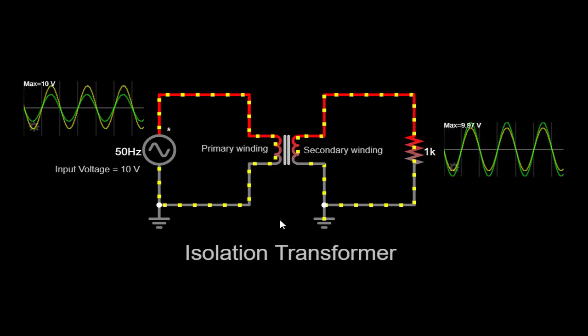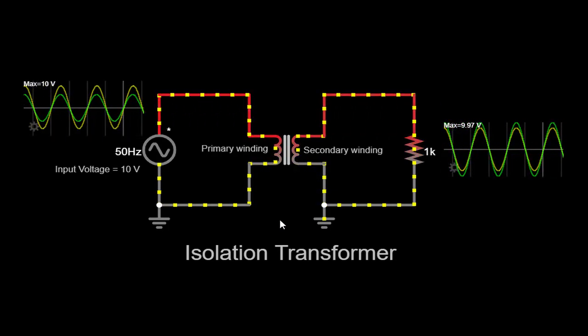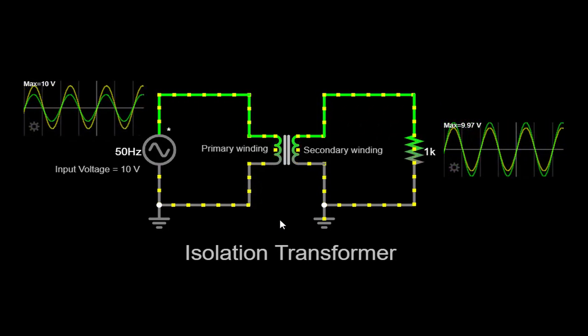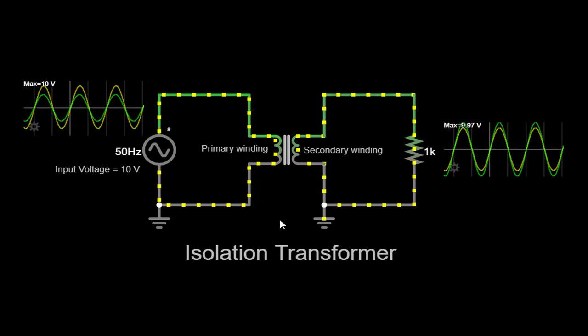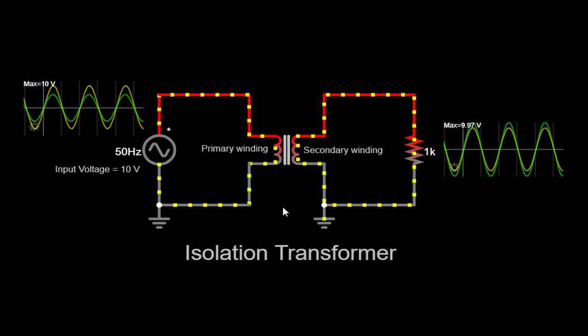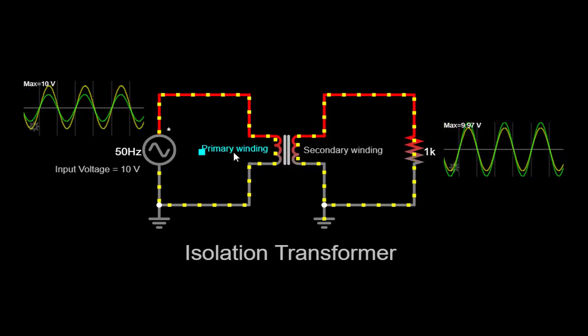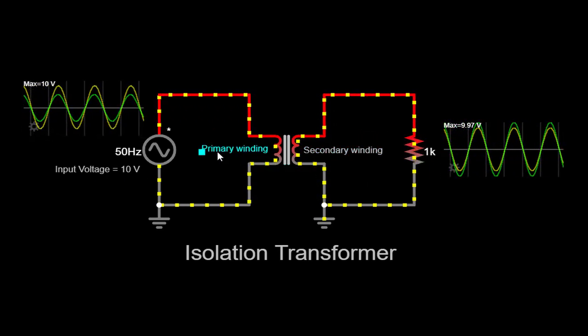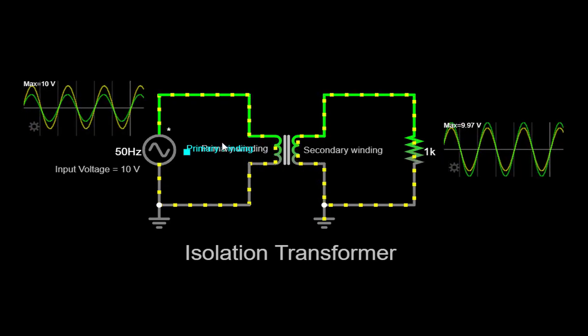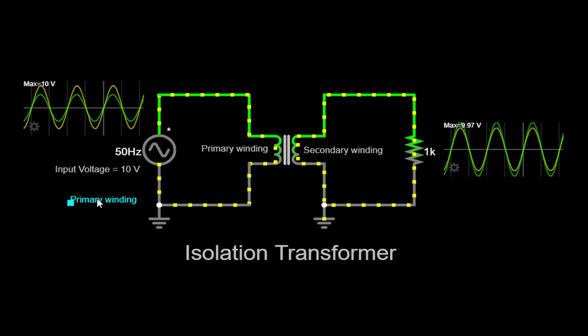So, let's get started. An isolation transformer is a device that plays a vital role in electrical systems by providing electrical isolation between the input and output circuits. It consists of two windings, the primary and secondary windings, which are electrically separated but magnetically coupled.